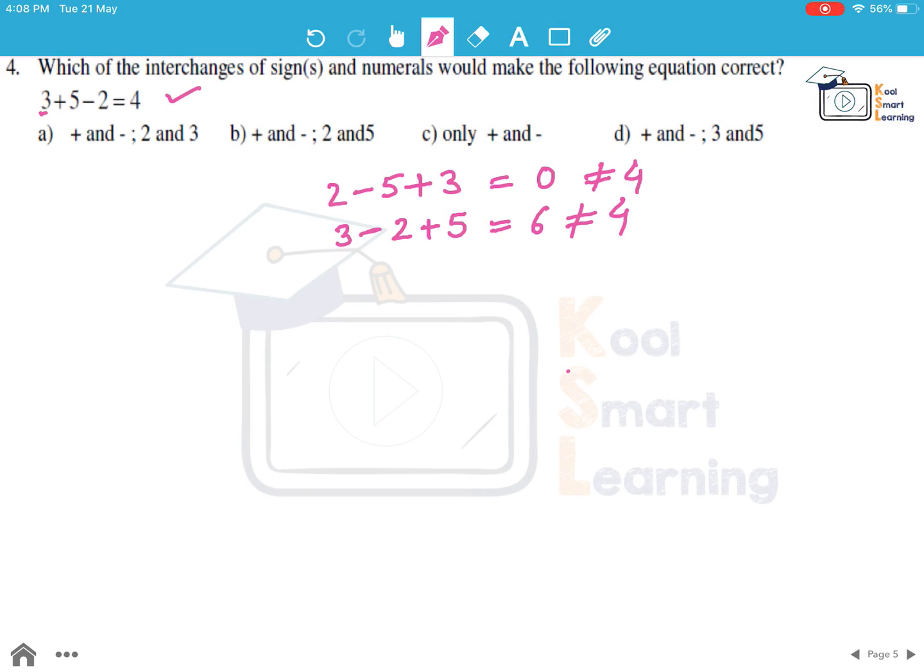Only plus and minus are interchanged. So we make it 3 minus 5 plus 2 which is again 0 and not equal to 4. Looking at the D option. Plus and minus are interchanged and 3 and 5 are interchanged. So we write instead of 3 we write 5, instead of plus we write a minus, instead of 5 we write 3 and then plus 2. So this makes it 5 minus 3 plus 2 is 4. So D is the correct option.